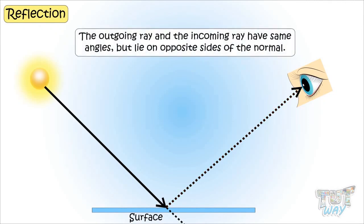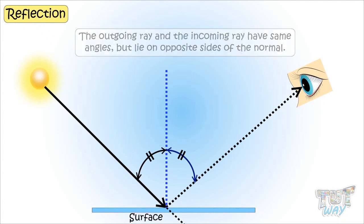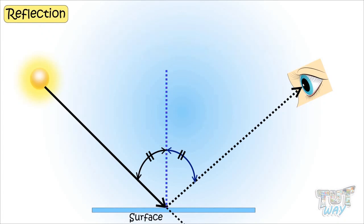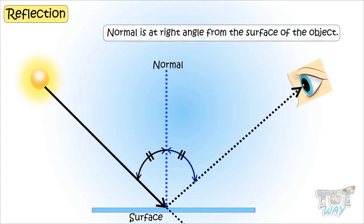The outgoing ray and the incoming rays have the same angles, but on opposite sides of the normal. This dotted line is called the normal, which is an imaginary line. The normal is at a right angle to the surface of the object.